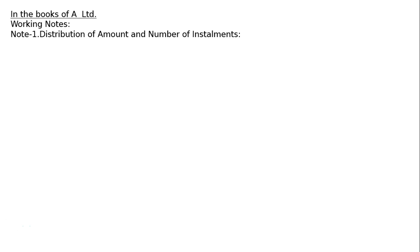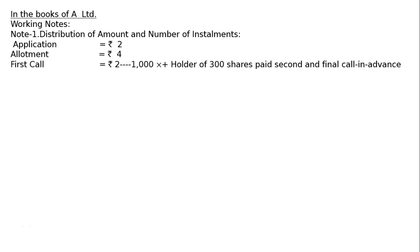A limited company with registered capital — Rs. 5 lakh shares of Rs. 10 each — issued 20,000 of such shares payable on application. The question asks to record the above in the company's journal and prepare the balance sheet. In the books of A Limited, working notes: Note 1 — distribution of amount per installment: application Rs. 2, allotment Rs. 4, first call Rs. 2, second and final call Rs. 2, total Rs. 10. You must read the question 2-3 times before going through this.